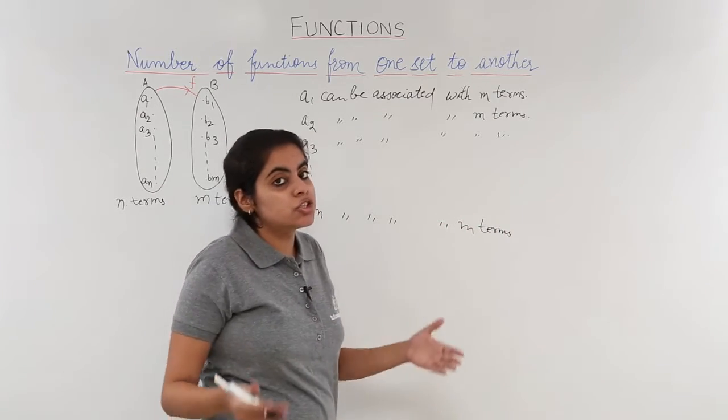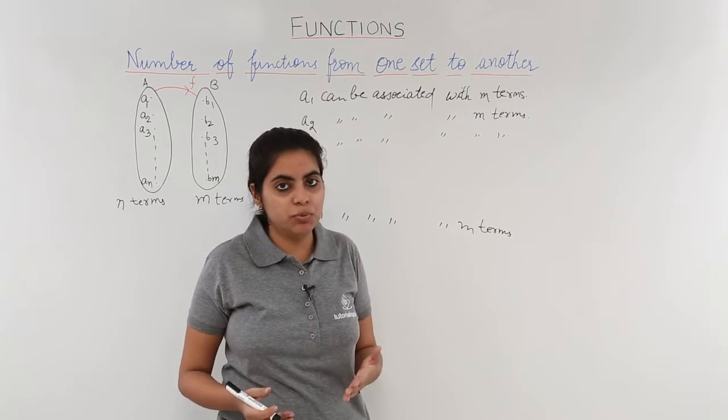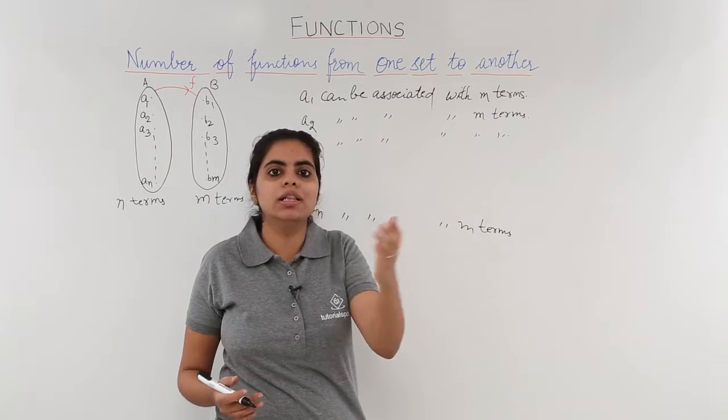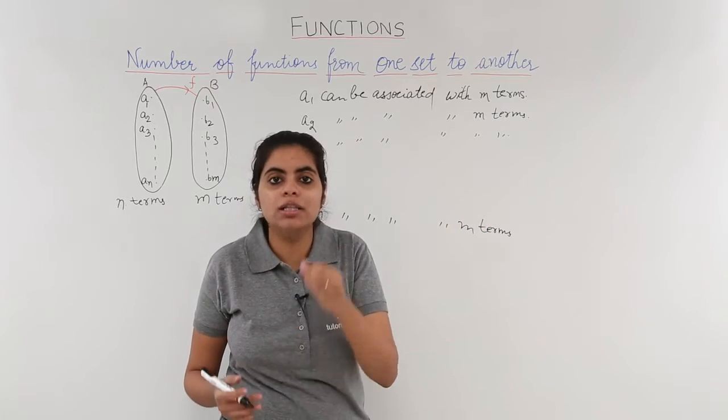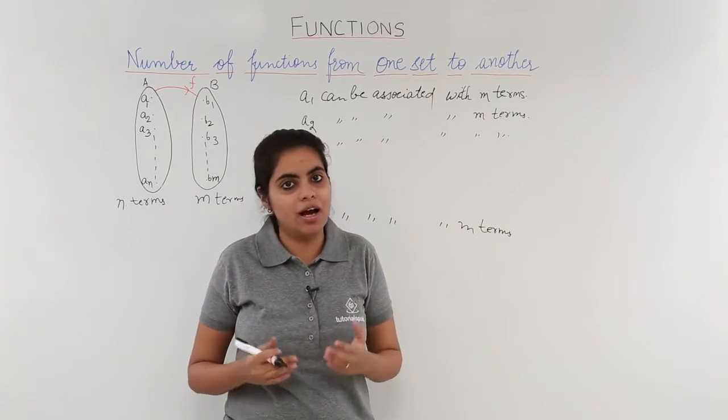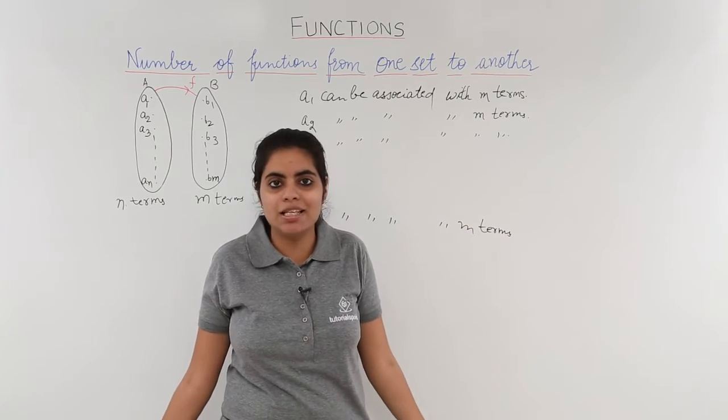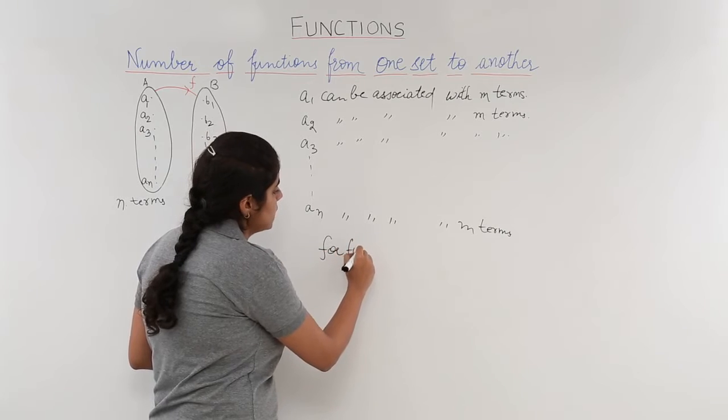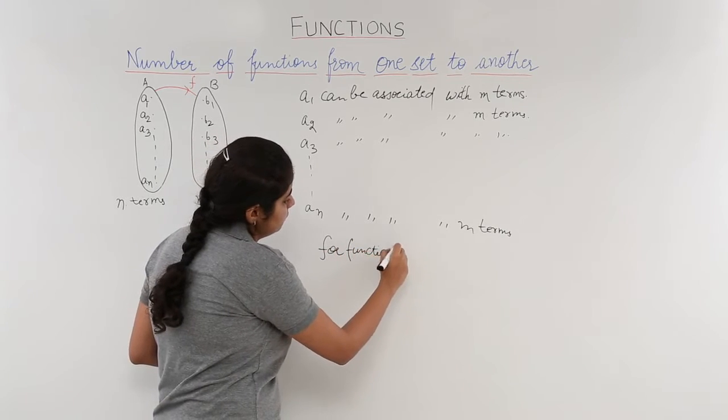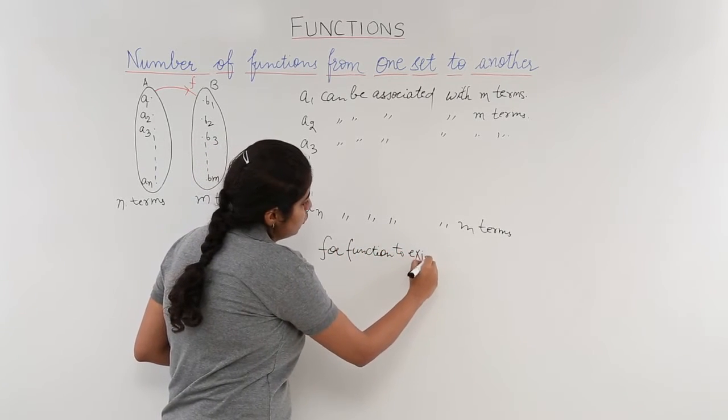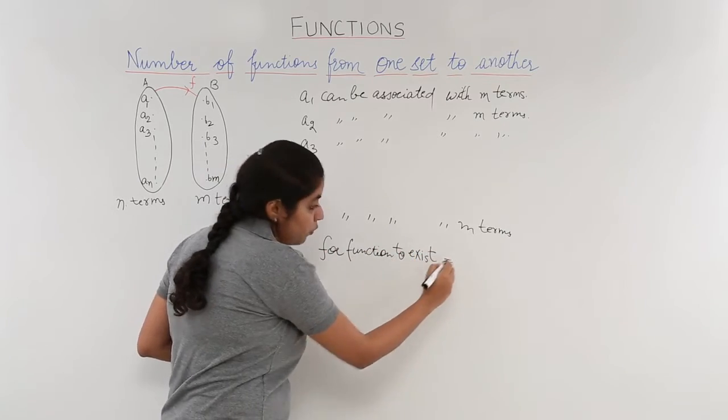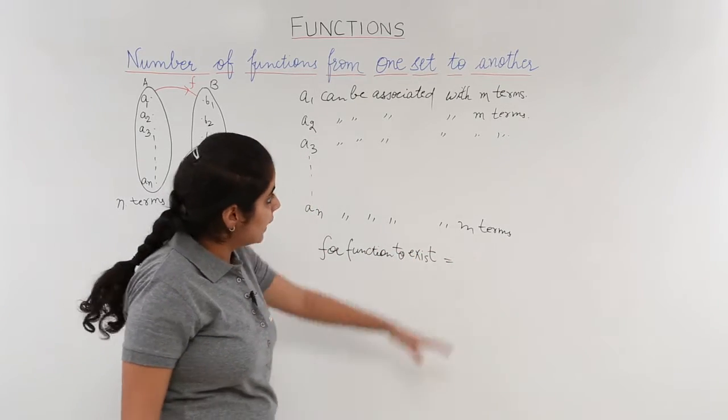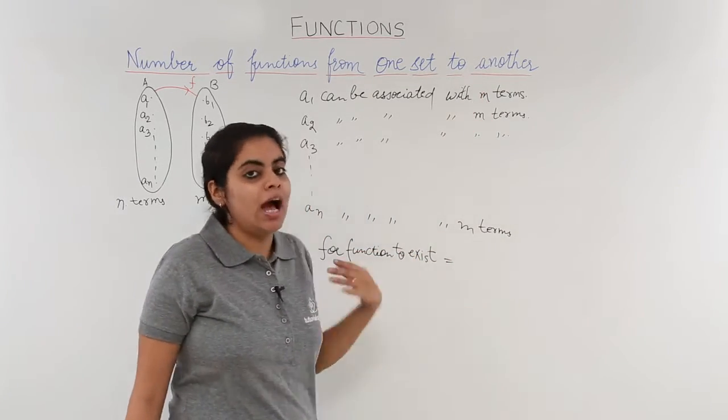So the function would be complete when all these elements, all the elements of the domain are associated, nothing is left unassociated. So for a function to be completed, for a function to exist, what is the necessary condition? That all these associations have to be made.